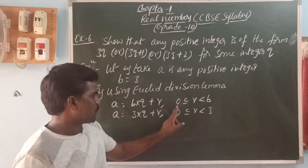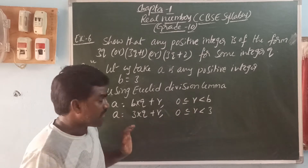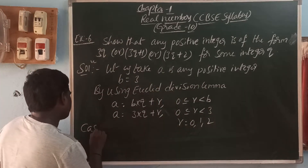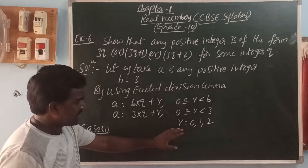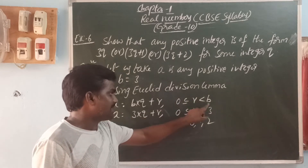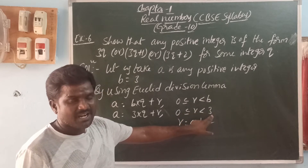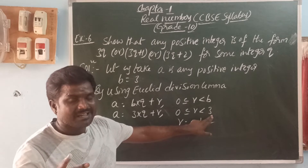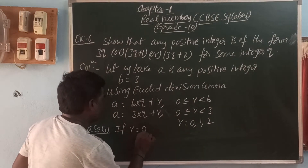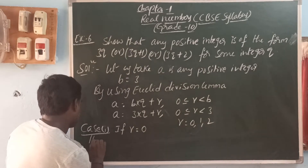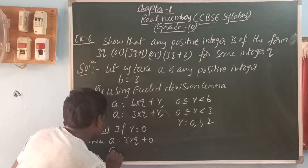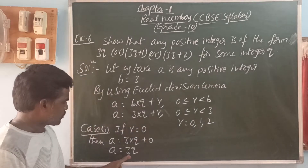So the remainder is greater than or equal to 0 and less than 3, meaning the values of the remainder are 0, 1, and 2. Case 1: if R equals 0, then A equals 3 into Q plus 0, which gives A equals 3Q. So the positive integer can be shown in the form of 3Q.